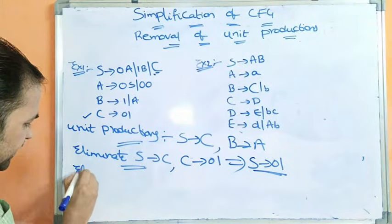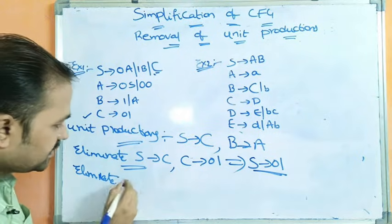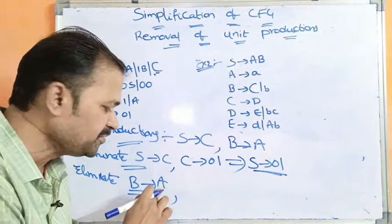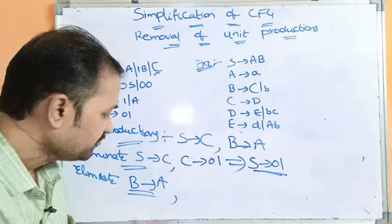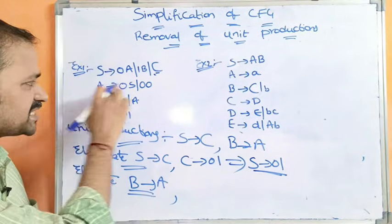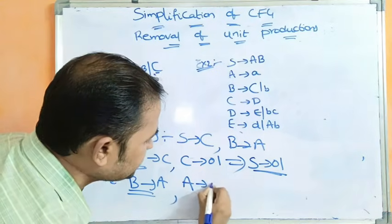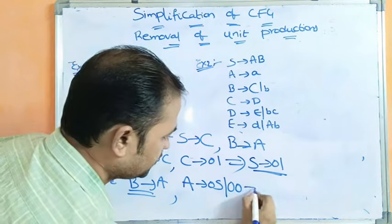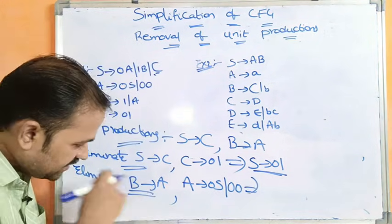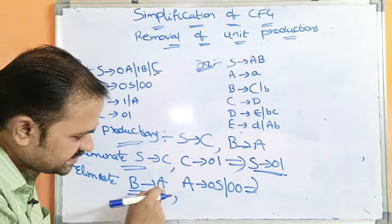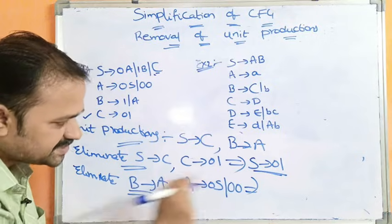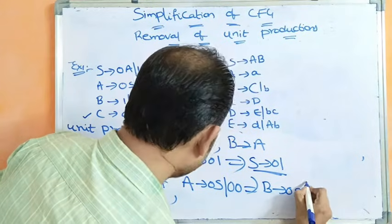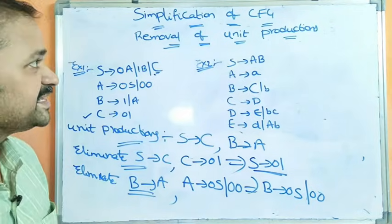Next, we need to eliminate the second unit production, B produces A. To eliminate B produces A, we take a production that starts with A. We have A produces 0A or 00. So this A on the right-hand side of B produces A is replaced with the productions of A, giving us B produces 0A or 00. This unit production is also removed.